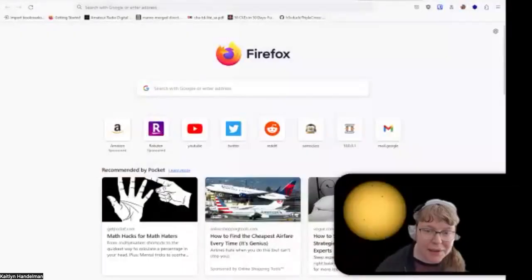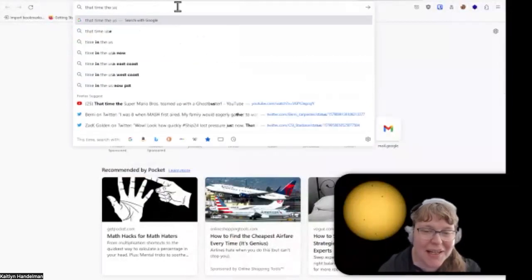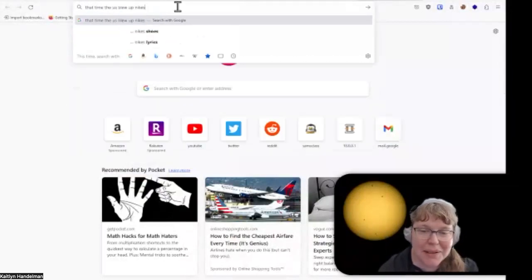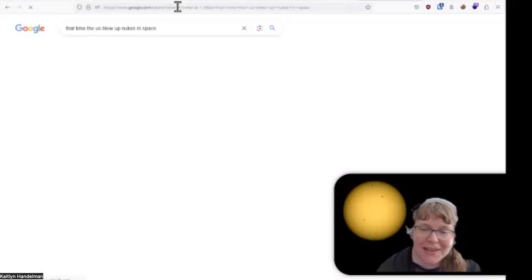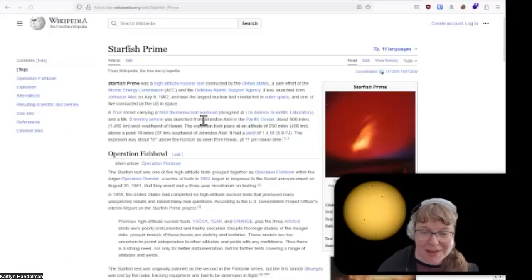In fact, oh, I'd have to look it up. I remember it was like somewhere in there over the Pacific Ocean. Yeah. In fact, I'll put my browser. Let's search for it now. Let's Google that time the U.S. blew up nukes in space. July 9, 1962. The starfish prime. That's it.